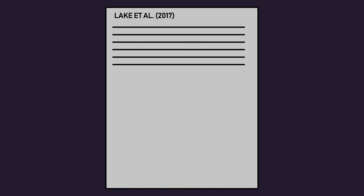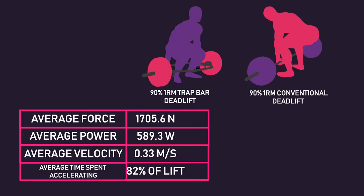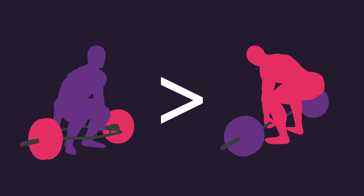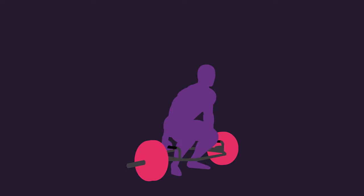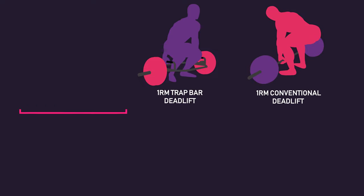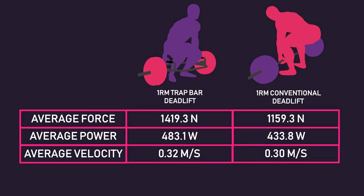A 2017 study by Lake and colleagues compared the average force, power, velocity and time spent accelerating during a 90% one-rep max low-handle trap bar deadlift and a 90% one-rep max conventional deadlift in 11 trained men. Average force, power, velocity and time spent accelerating were all greater for the low-handle trap bar deadlift. Although this is acute data, these results do imply that for athletes, the trap bar deadlift is probably superior to the conventional deadlift. This would still be the case with the high-handle trap bar deadlift — Lockie and colleagues compared a one-rep max high-handle trap bar deadlift to a conventional deadlift one-rep max for average force, power and velocity, and the high-handle trap bar deadlift was superior in all areas.